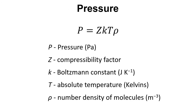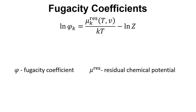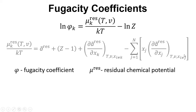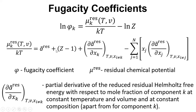We can then get the pressure using a related equation. We might also be interested in fugacity coefficients — there is an equation that relates the fugacity coefficient with the residual chemical potential. The residual chemical potential can be obtained by calculating A-res, the reduced residual Helmholtz free energy, along with the partial derivative of A-tilde-res with respect to the mole fraction of component K, keeping temperature, volume, and the composition of all other components constant. These terms together allow us to calculate fugacity coefficients.